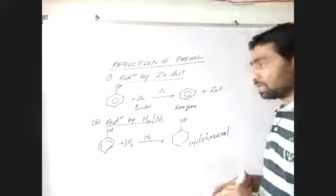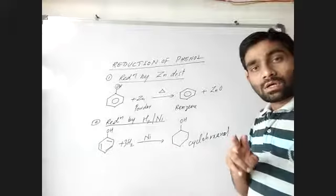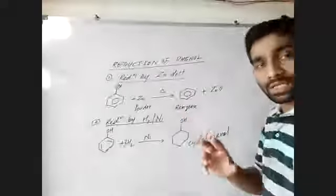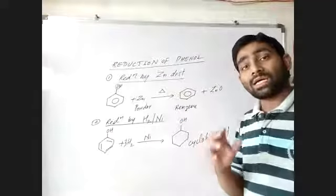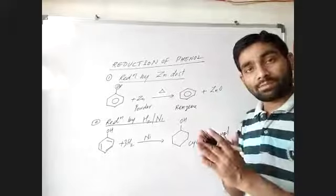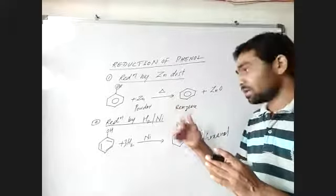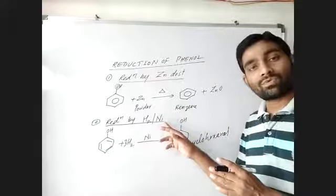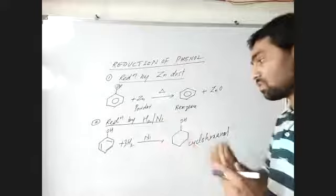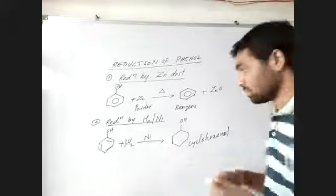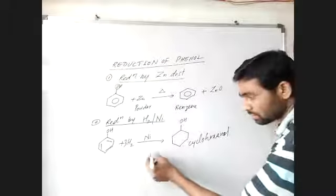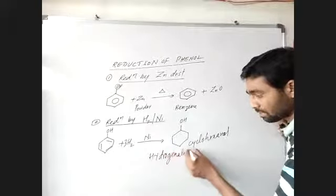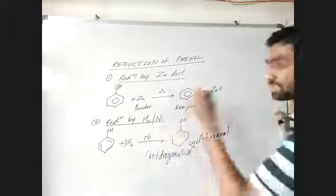So there are two different reduction reactions for phenol. One is reduction by zinc, which involves the removal of the oxygen atom by zinc. The other is reduction by hydrogen in the presence of nickel catalyst, which is called hydrogenation. Both are examples of reduction reactions of phenol.